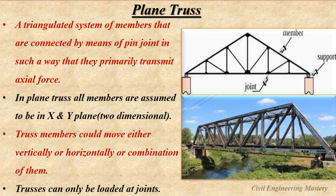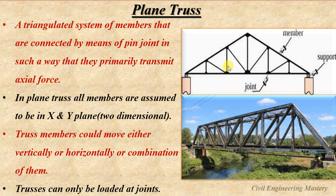Plane trusses are two-dimensional structural forms. In a plane truss, all the members are assumed to be in the same plane, that is in the X and Y plane. Here is the plane truss — these are all the members, these are all the joints, and here is the support. It is a triangulated system of members connected by means of pin joints and they are mainly subjected to axial force only. That means there is no bending moment in trusses. Members are rigidly connected at joints, and due to this rigidity bending moments are introduced but they are negligible.